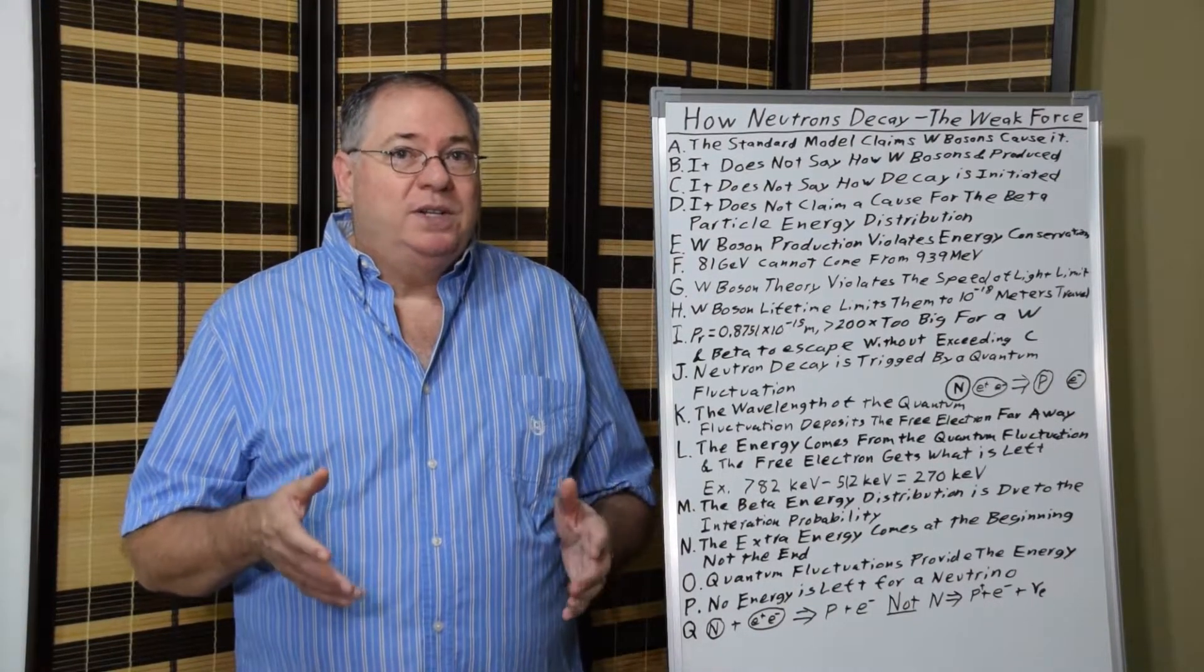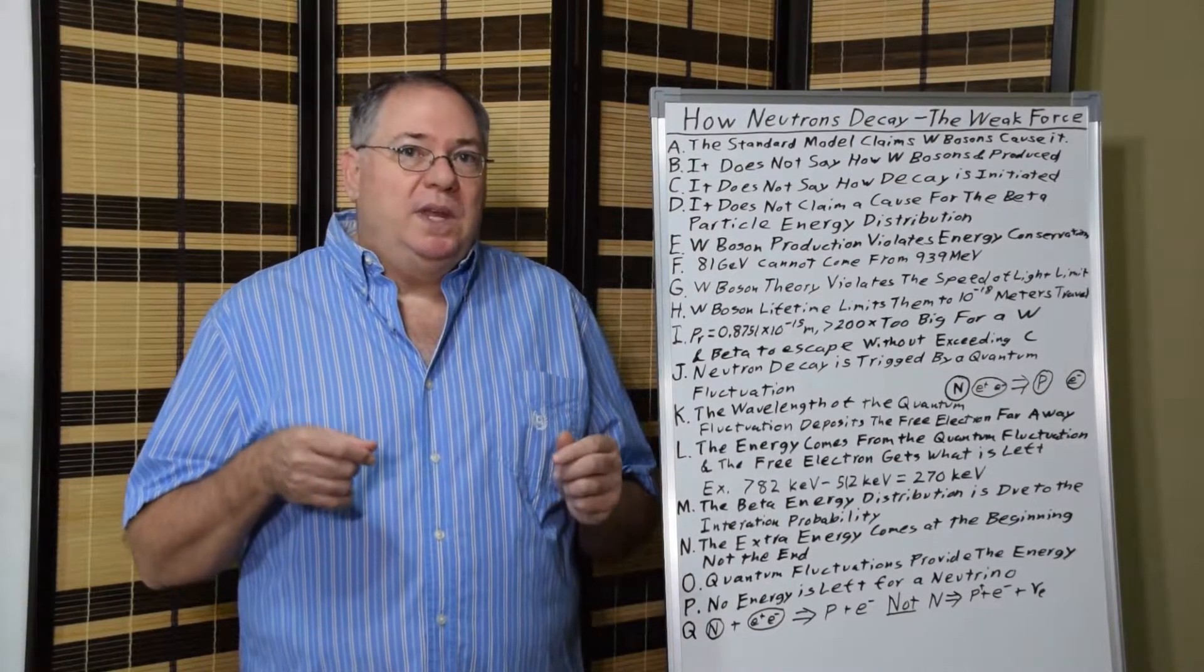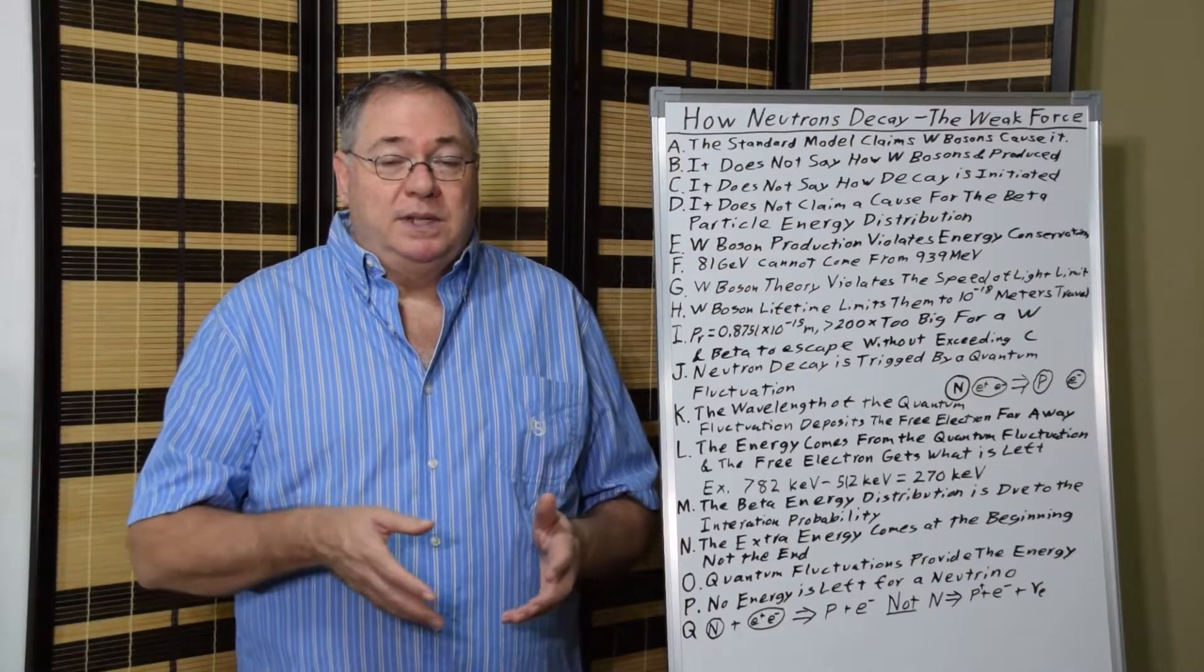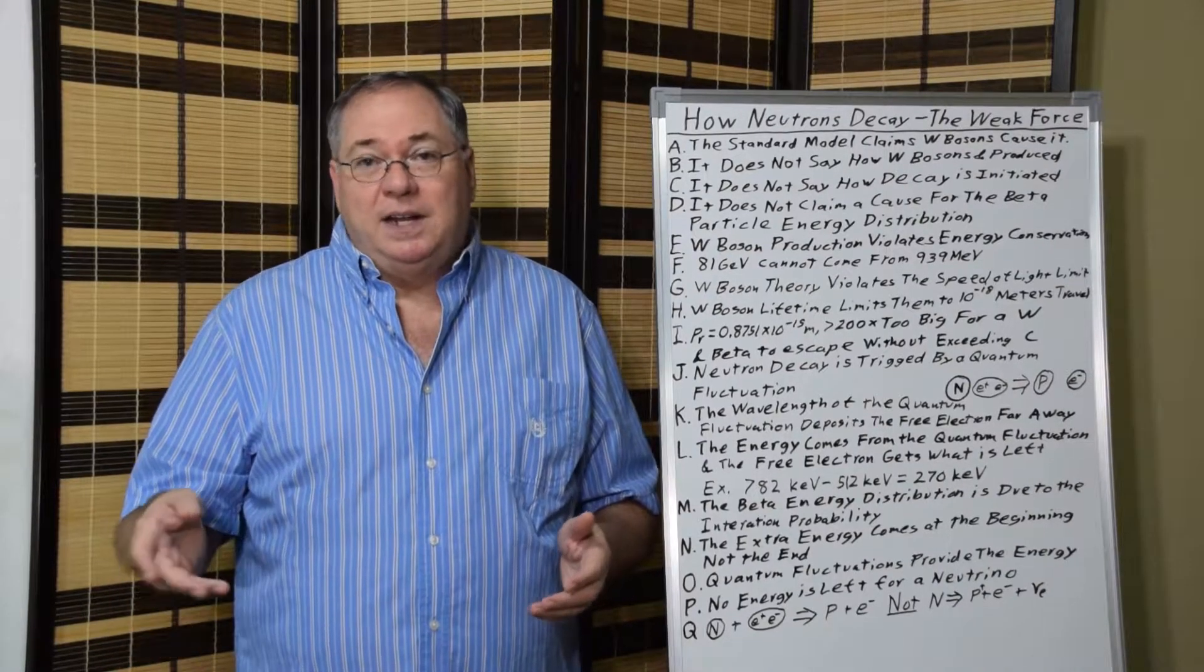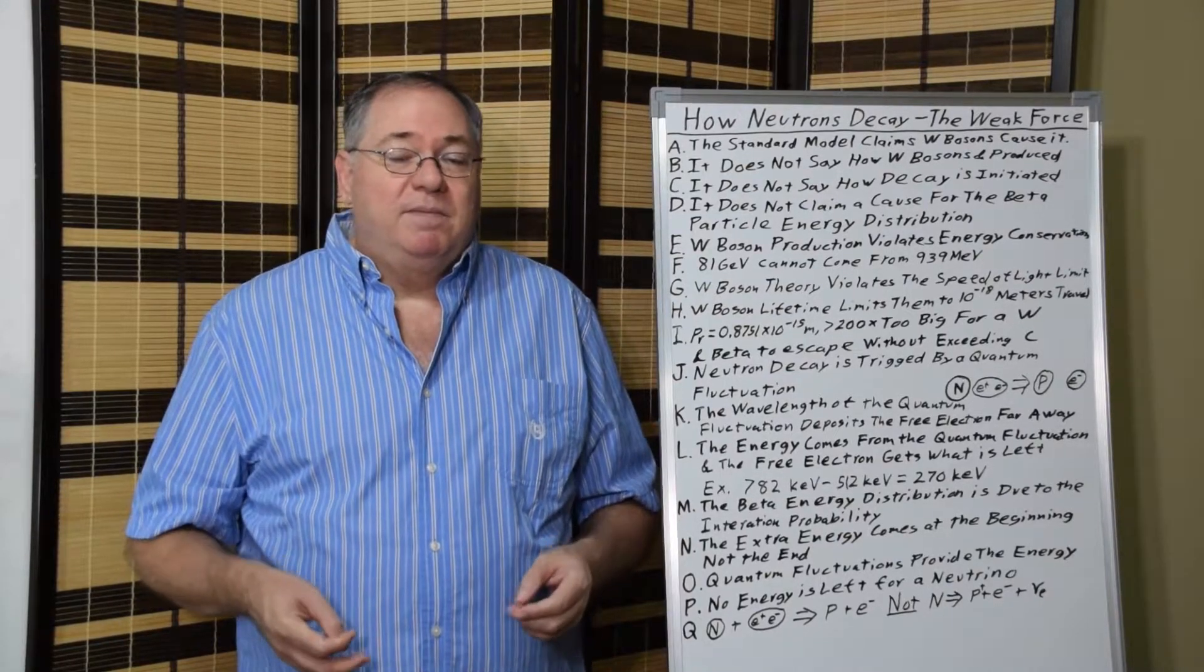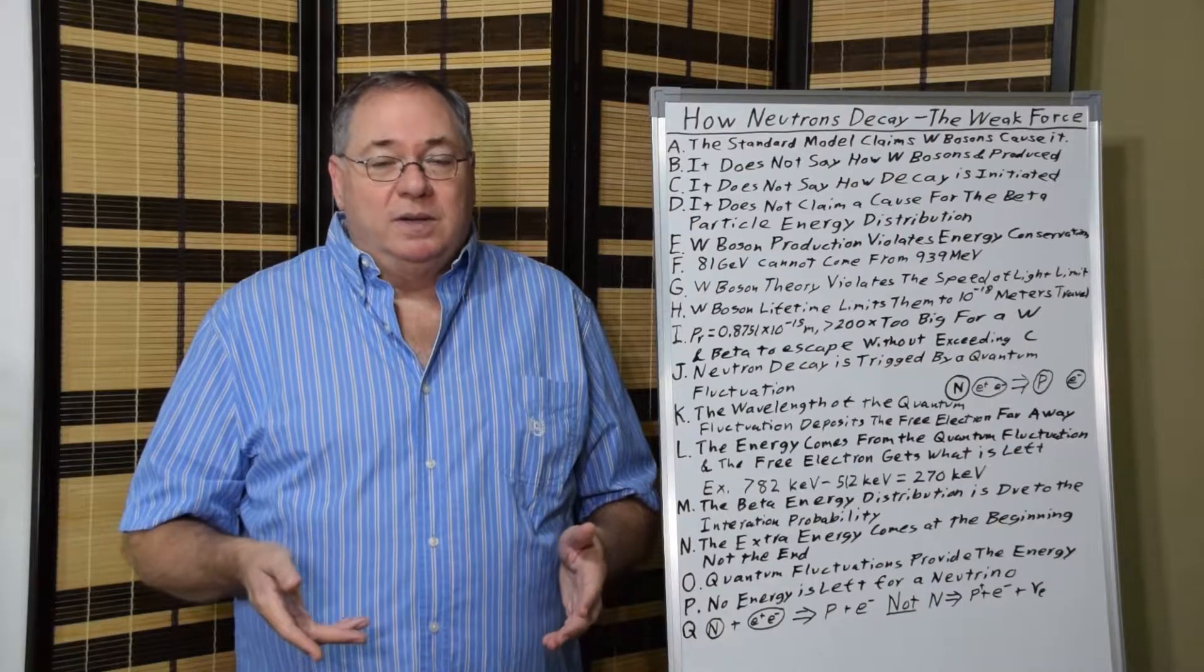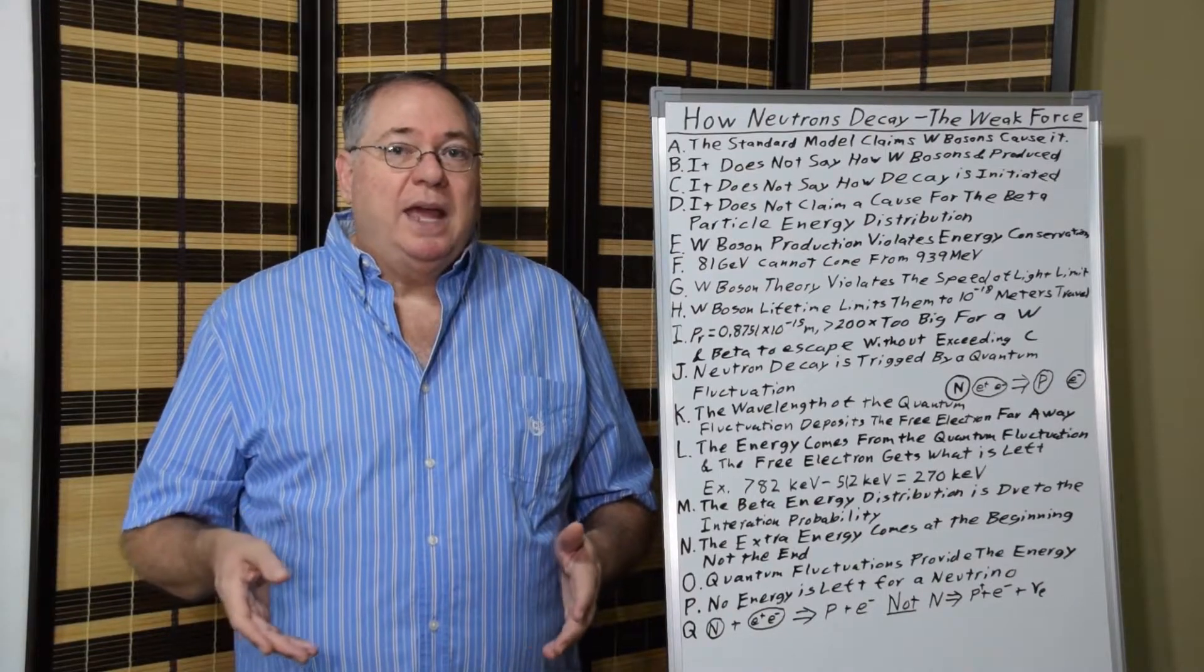Less than 200 times smaller than the proton. So, the W-boson model violates the speed of light limit. Because it assumes the W-boson can somehow escape the proton and a positive electron outside the proton. But it doesn't exist long enough.